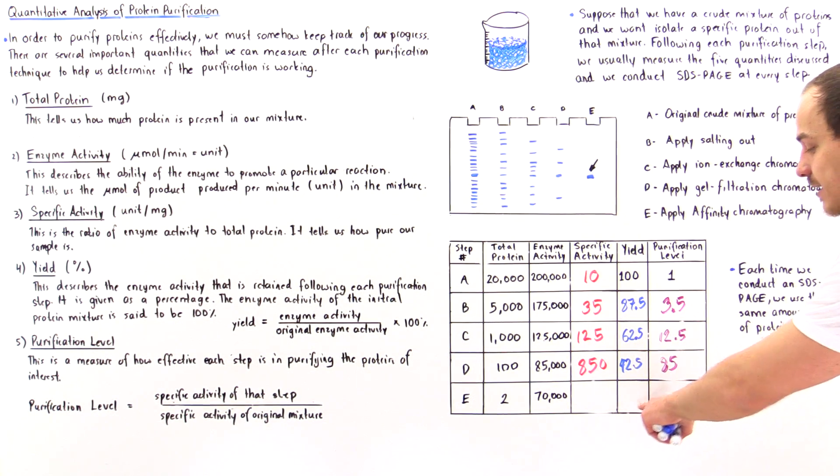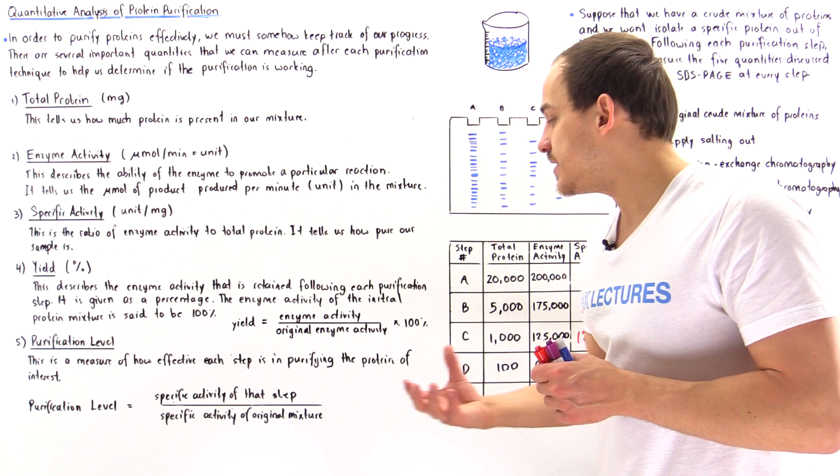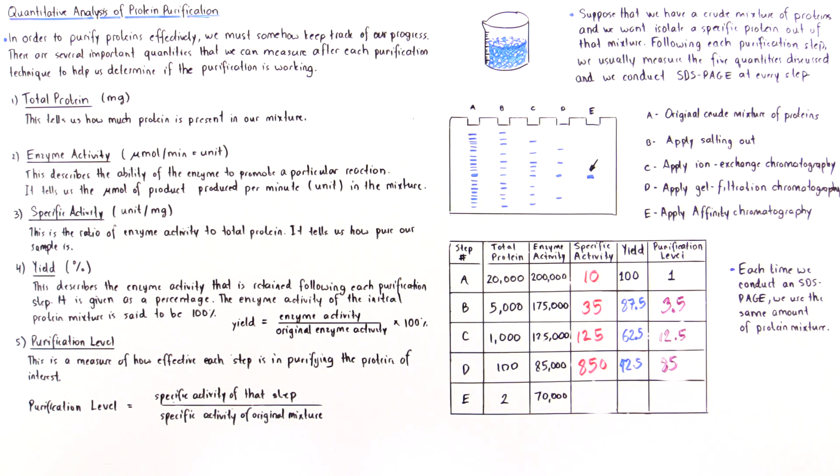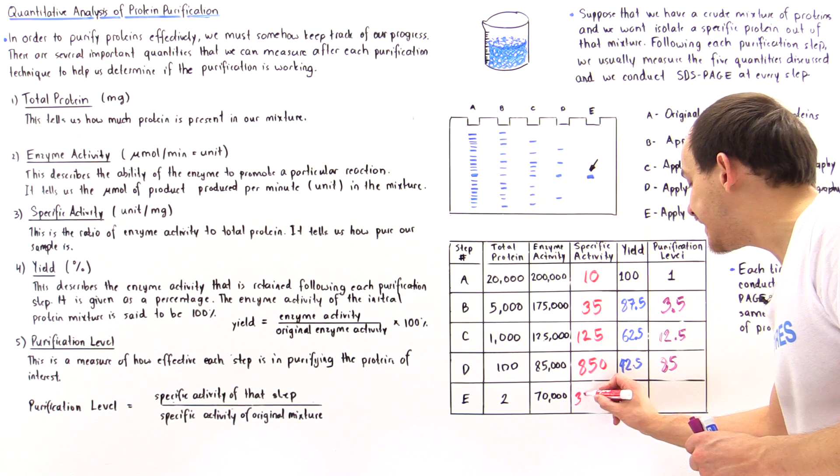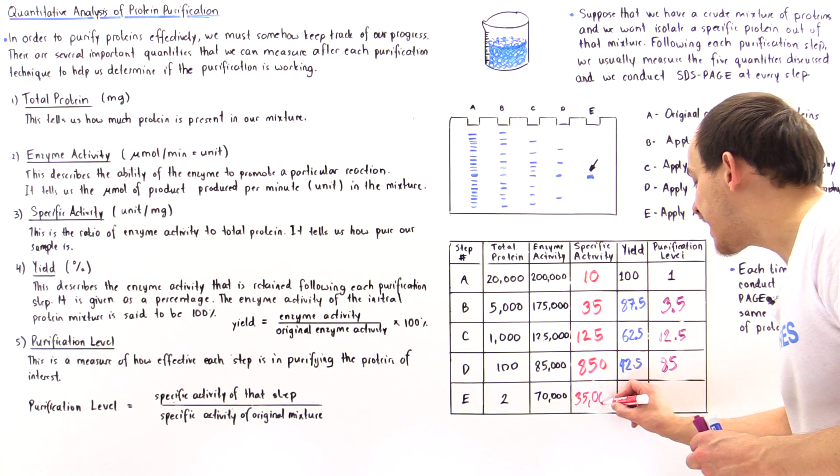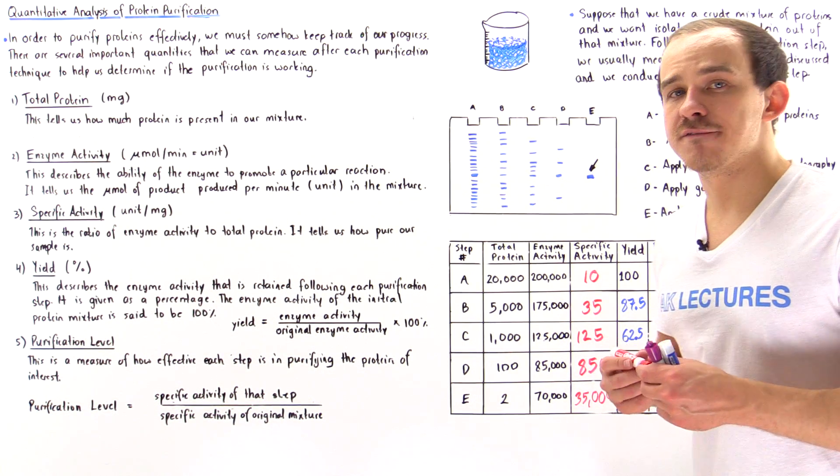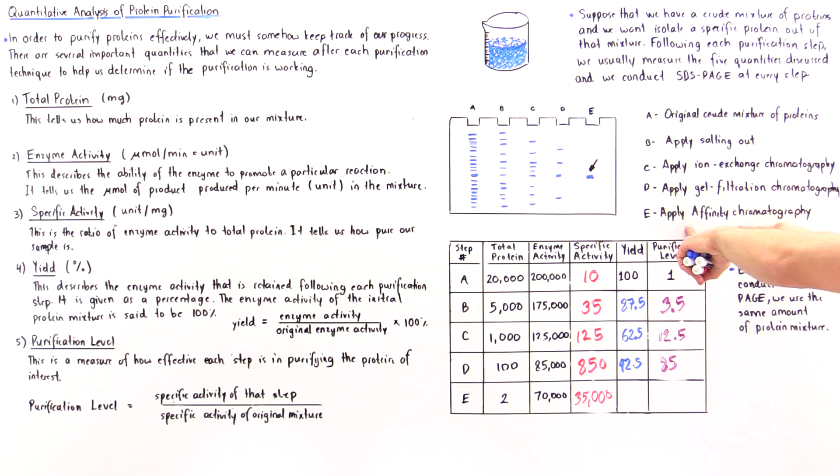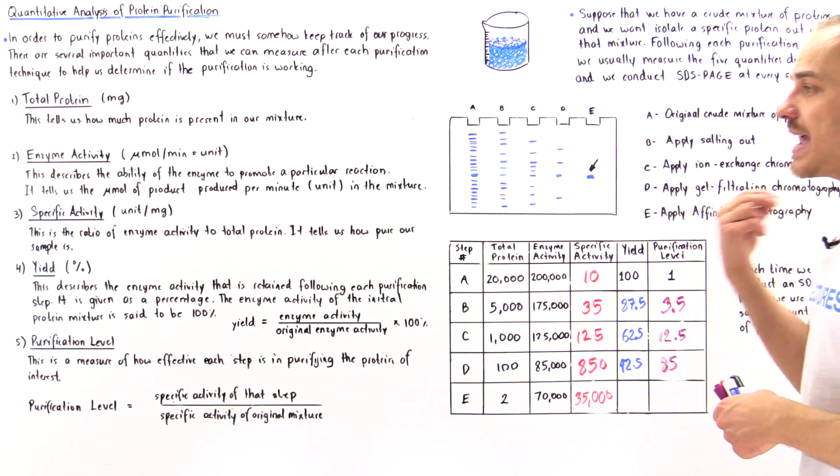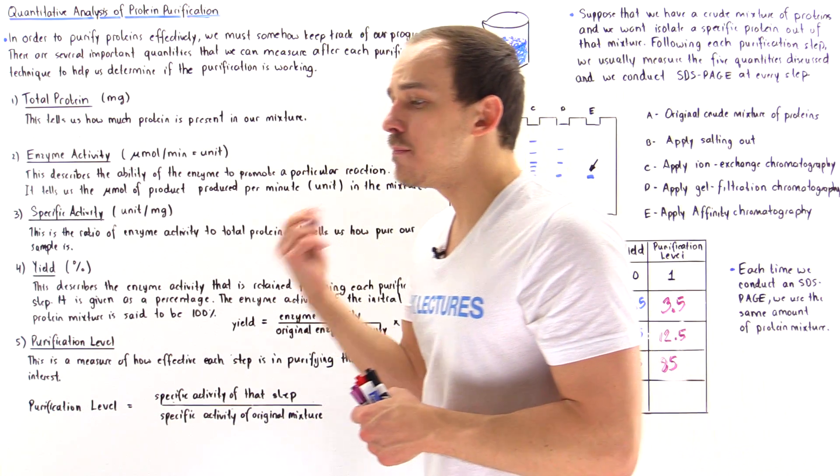To calculate this, we take this divided by 2 and we get 35,000. We see that in fact this procedure has a high specific activity, and that makes sense because affinity chromatography separates these enzymes based on their ability to bind to specific enzymes.